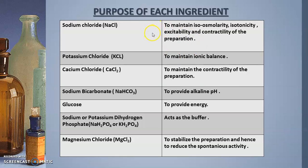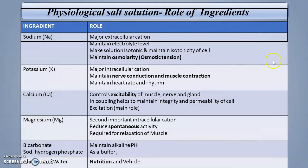Each ingredient has a specific role so that the tissue remains viable for the maximum period of time. In summary: sodium maintains osmolarity and osmotic pressure; potassium supports nerve conduction and muscle contractility; calcium supports excitability and contractility; magnesium reduces continuous spontaneous activity; potassium dihydrogen phosphate maintains alkaline pH and acts as a buffer; sodium bicarbonate provides alkaline pH; and glucose and water serve as nutrient/energy source and vehicle respectively.